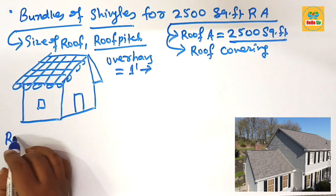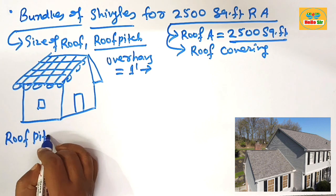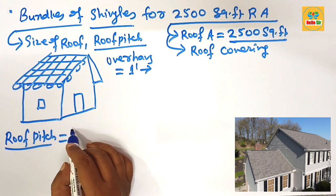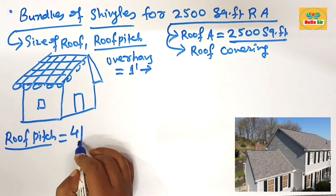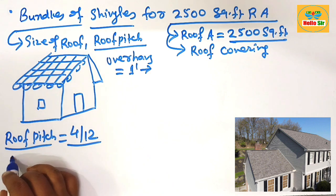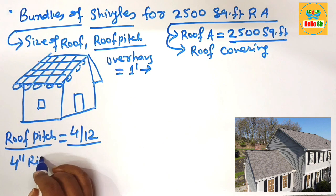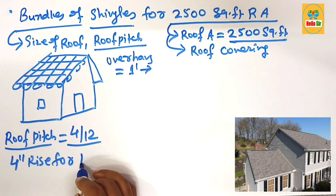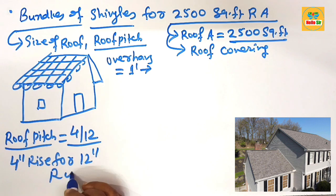And what will be roof pitch? For general slope, the roof pitch will be, assume we take here 4 by 12. That means there are 4 inches rise for every 12 inches of run.